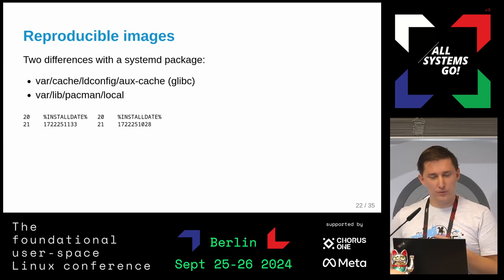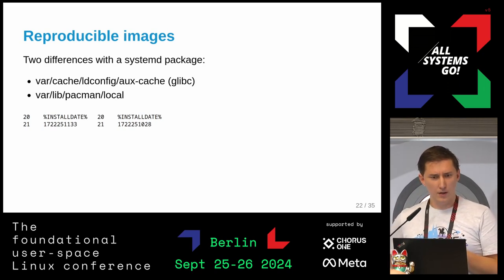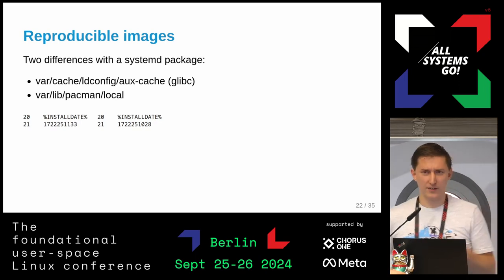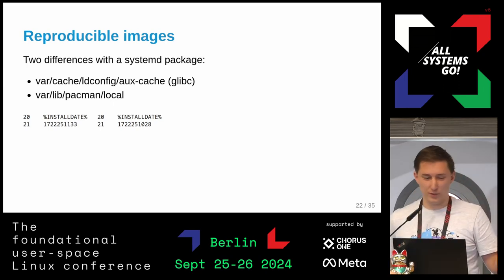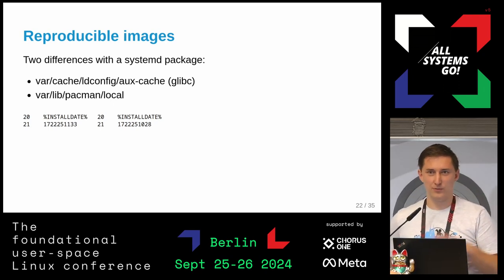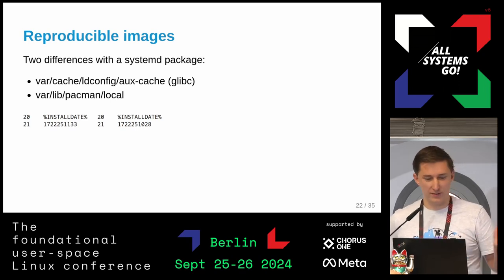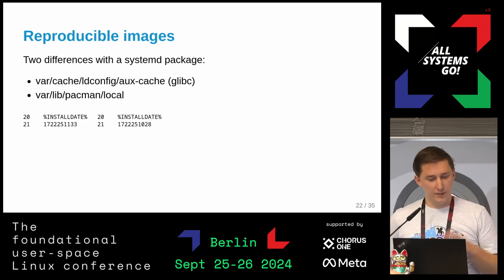I made a script: export `SOURCE_DATE_EPOCH` to some fixed date, build a directory with just systemd installed, run it twice — once into `foo`, once into `bar` — compare them. I found two differences. One is the GCC package generates a post-install script producing a libconfig caching file — this seems to be a sorting issue. It can be removed because it's automatically regenerated, so that was easy to fix.